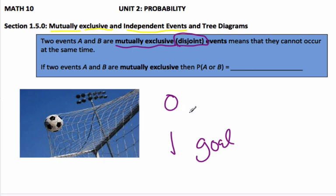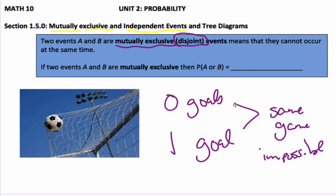Now, it is impossible to score zero goals and one goal in the same game. That is impossible. So they are mutually exclusive. We often look at this as the possibility of scoring zero goals and the possibility of scoring one goal, and there's no overlap. They cannot happen at the same time.